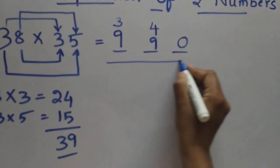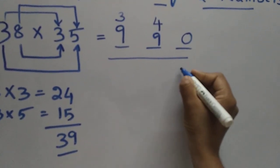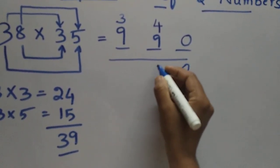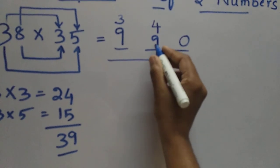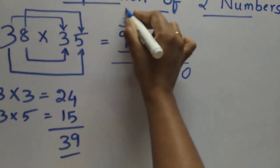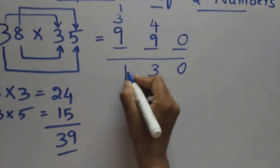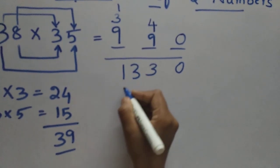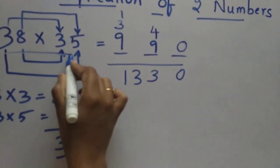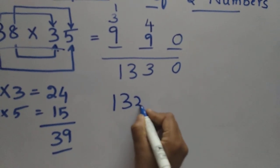After that we can add these all. For this 13, write 3 here and take carry here. And 13. 38 into 35 — the answer is 1330.